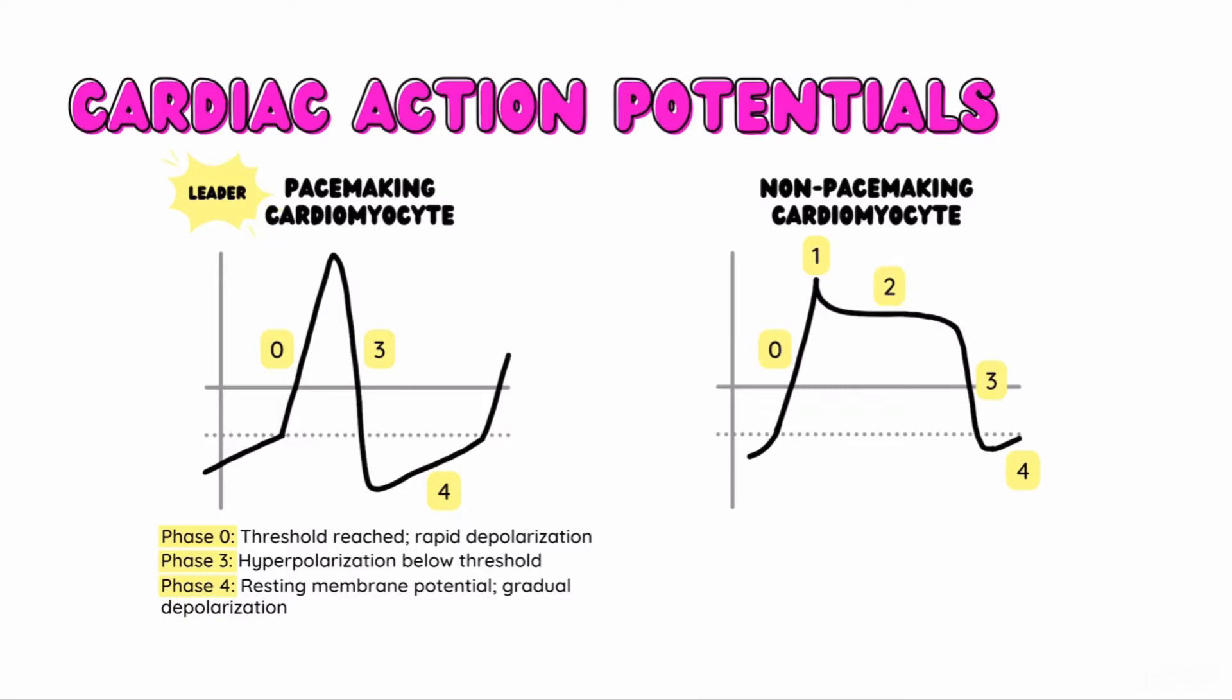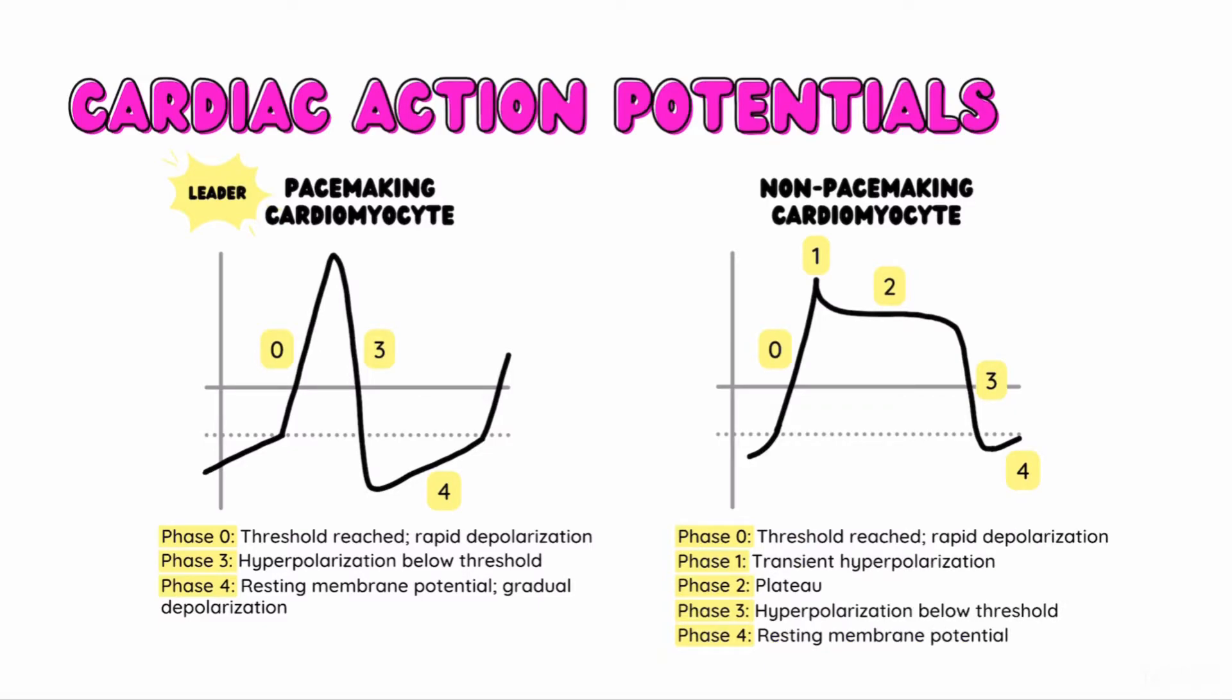The pacemaking cells signal the cardiomyocytes to begin their own depolarization and subsequent muscle contraction. In phase 0, the cardiomyocytes reach the threshold potential and rapidly depolarize. This causes the cardiomyocytes to actively begin contraction and propulsion of blood out of the ventricles. In phase 1, there is a brief moment of initial hyperpolarization, followed by the plateau of phase 2. This plateau represents the sustained contraction of the cardiomyocytes to ensure maximal expulsion of blood from the ventricle. In phase 3, the cardiomyocytes rapidly hyperpolarize to reach the resting membrane potential of phase 4, and the cycle repeats.